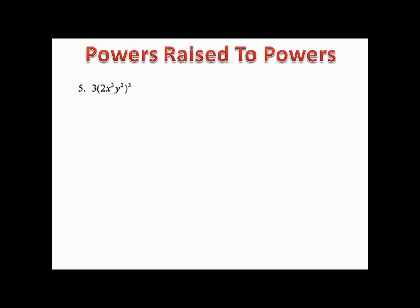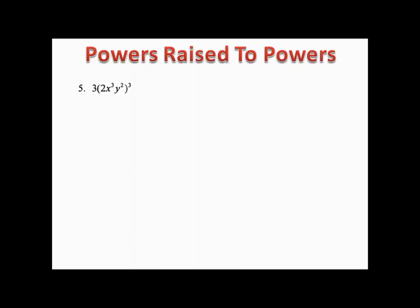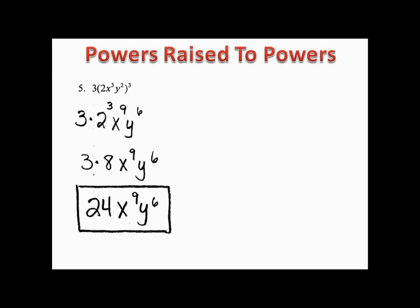Here's one for you to try: distribute the exponent of 3 to everything inside the parentheses — don't forget that the 2 has a power of 1. Please pause the video and give it a try. When we distributed the 3, we got 2³x⁹y⁶. Two to the third is 8, and 8 times 3 is 24, so we have 24x⁹y⁶.